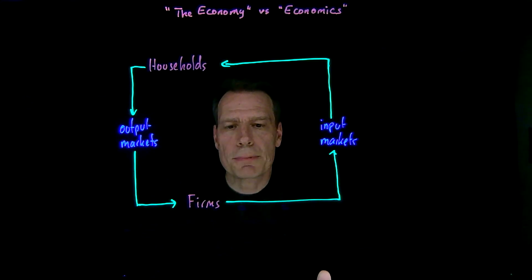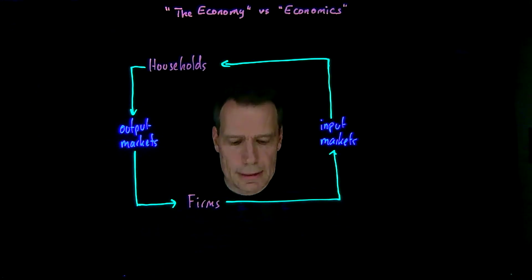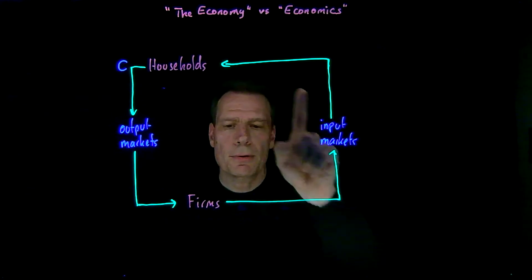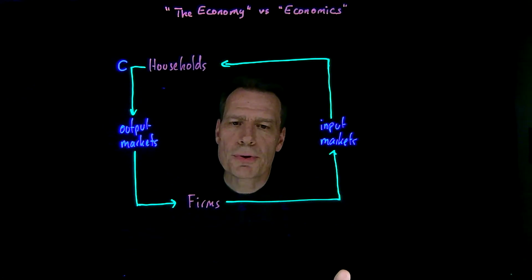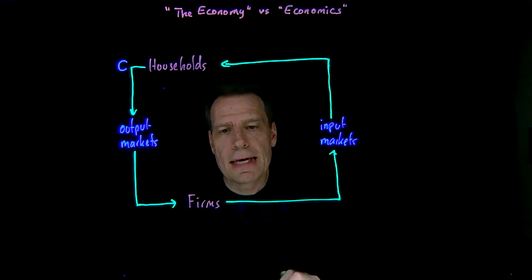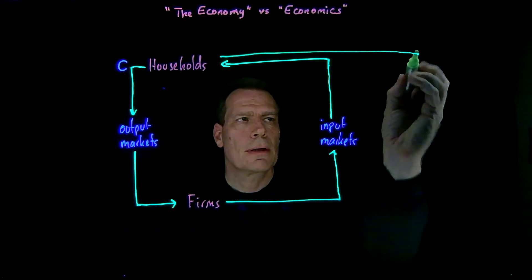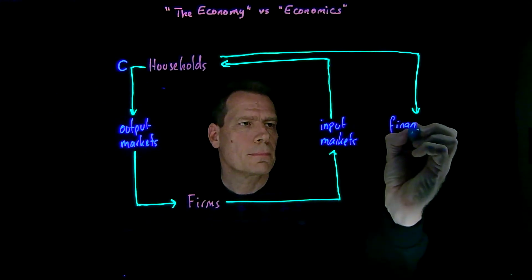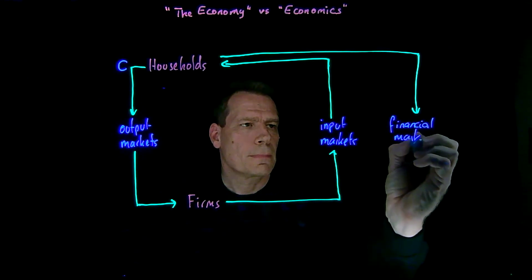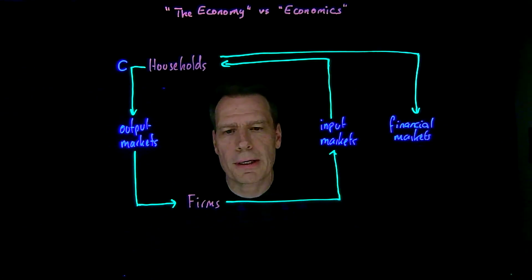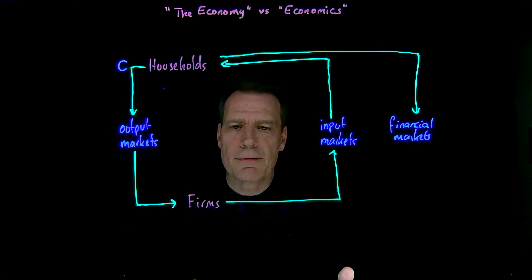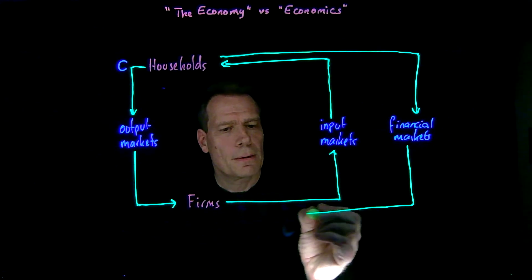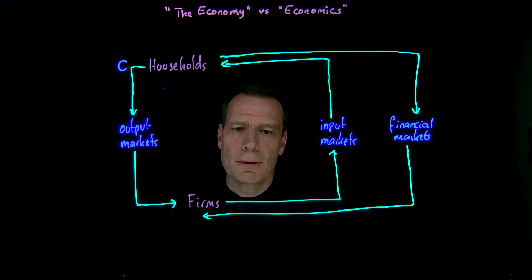But of course it's way too simple a description for a modern economy. In this simple version, households consume — we'll denote that with a C — and they also sell their labor to firms. But households also save money, and when they save, money flows from households into a third set of markets which we'll call financial markets. But those financial markets don't just sit on that money; they make that money available for investment, so that money leaves the financial markets.